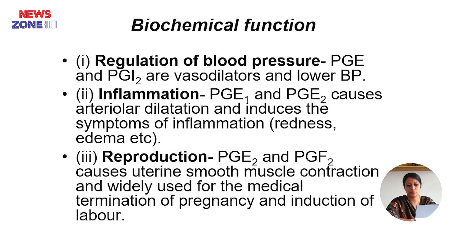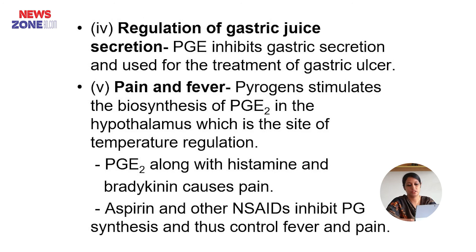Reproduction: Prostaglandin E2 and prostaglandin F2 cause uterine smooth muscle contraction and are widely used for medical termination of pregnancy and induction of labor. Regulation of gastric juice secretion: Prostaglandin E inhibits gastric secretion and is used for the treatment of gastric ulcer. Pain and fever: Pyrogens stimulate the biosynthesis of prostaglandin E2 in the hypothalamus, which is the site for temperature regulation. Prostaglandin E2 along with histamine and bradykinin causes pain. Aspirin and other non-steroidal anti-inflammatories inhibit prostaglandin synthesis and thus control fever and pain.